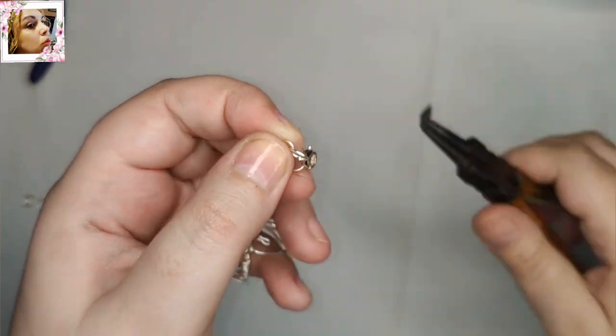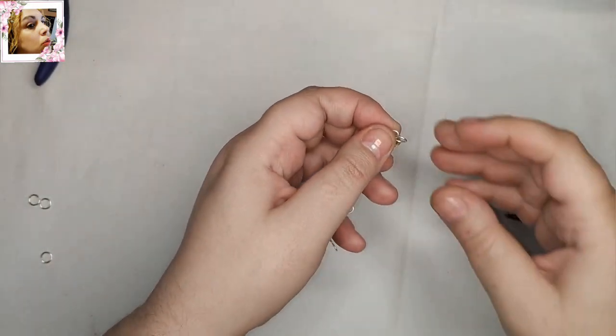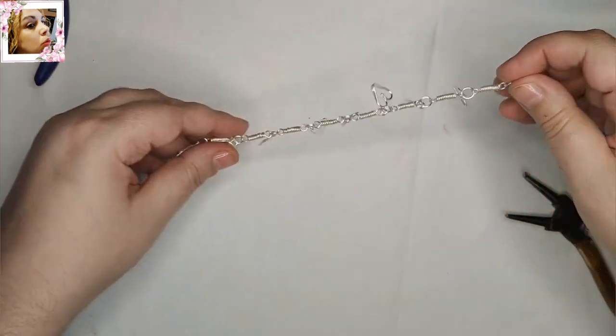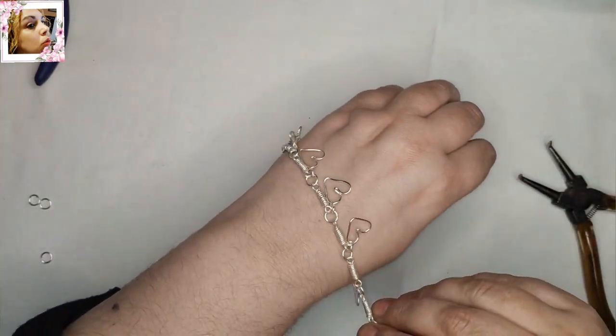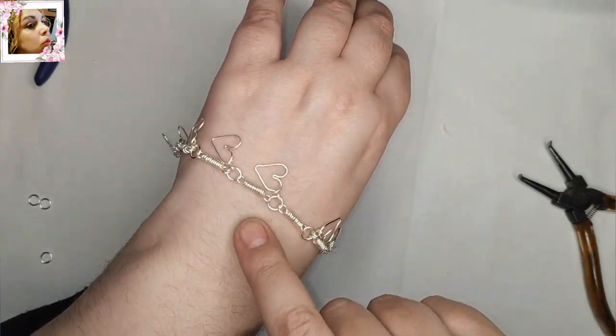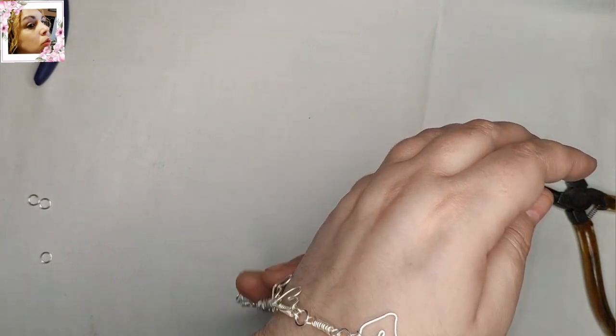Ya está y ahora voy a colocármela. Ya sabemos que las argollas se tienen que ver así sobre la piel a plan y que los corazones van hacia la parte de debajo.